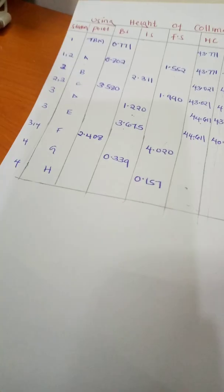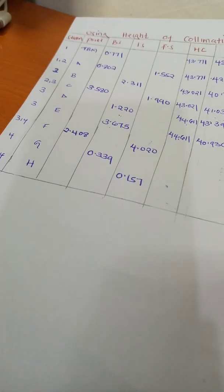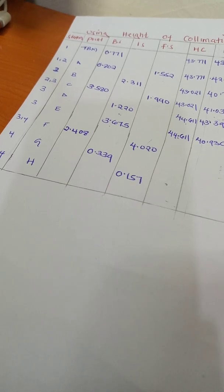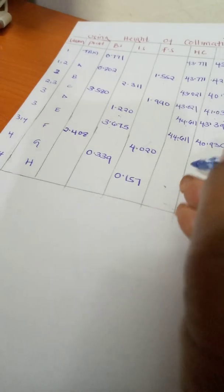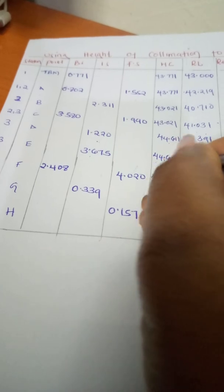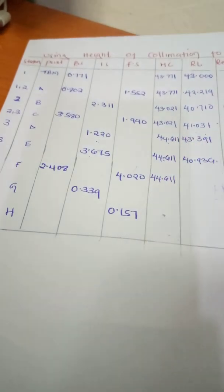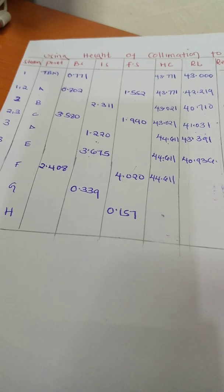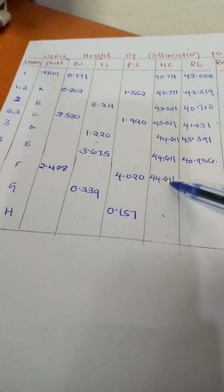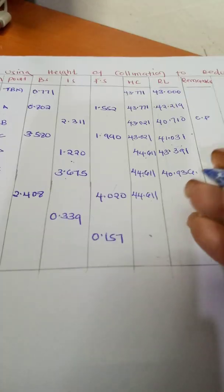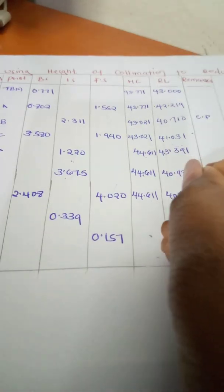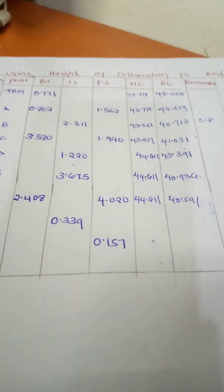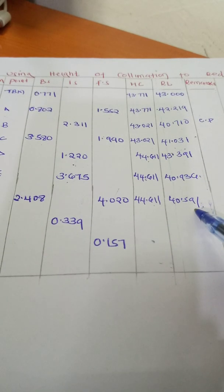At point F we have a backsight and a foresight, so the height of collimation remains 44.611. The reduced level changes: it is 44.611 minus the foresight, which gives us 44.591.